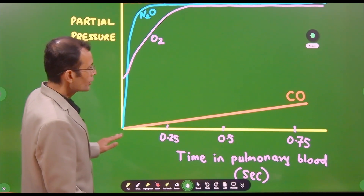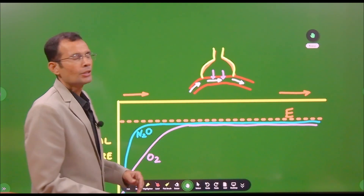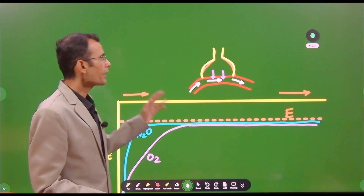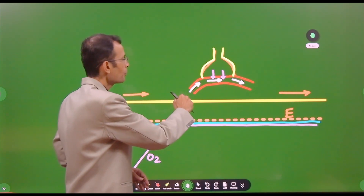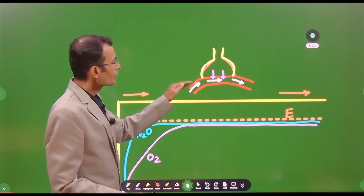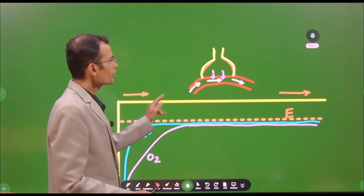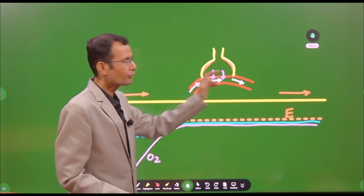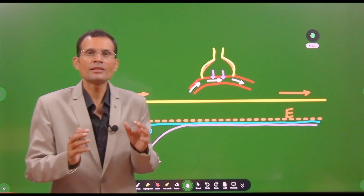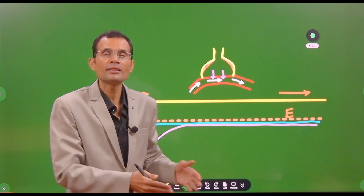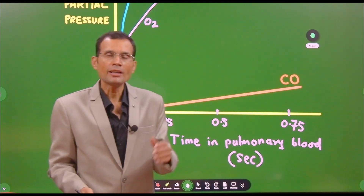On the horizontal axis of the graph, we have time in the pulmonary capillary blood. An average RBC takes about 0.75 seconds to cross the pulmonary blood — from the pulmonary artery, through the lung alongside the alveoli, and into the pulmonary vein. This is the transit time for an average RBC in the pulmonary blood, about 0.75 seconds, and this represents the rate of pulmonary blood flow. Let's see in this 0.75 seconds whether a gas can reach equilibrium.